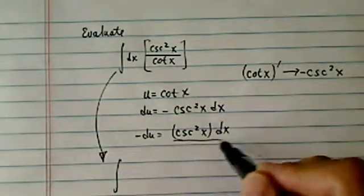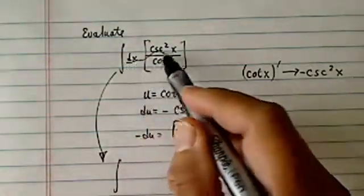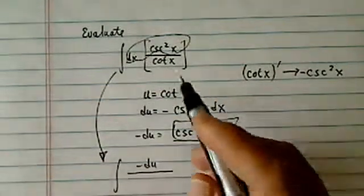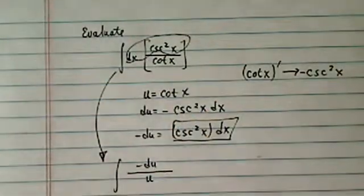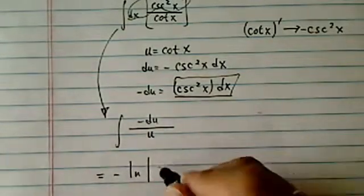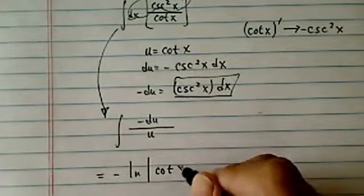we have this chunk times dx becomes minus du, and then cotangent on the bottom is u here. Then you have minus natural log of u, which is u, cotangent of x.